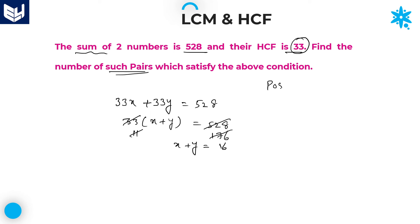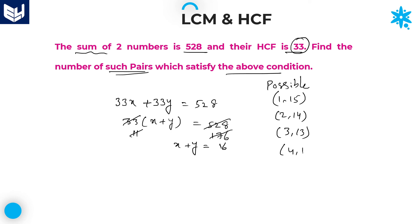Now write all possible pairs. Possible pairs are different from pairs which satisfy the condition — that is different. Write down all possible pairs where the sum of two numbers equals 16: (1, 15), (2, 14), (3, 13), (4, 12), (5, 11), (6, 10), (7, 9), and finally (8, 8). These are the total 8 possible pairs.